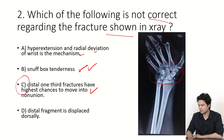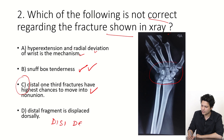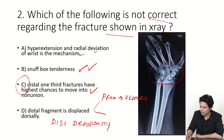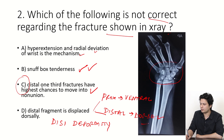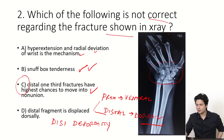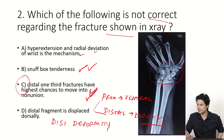The fourth option: the distal fragment is displaced dorsally — yes, this is also known as DISI deformity in scaphoid fractures. In displaced scaphoid fractures, the proximal pole goes ventral while the distal fragment moves dorsal. This is the type of deformity that occurs in all displaced scaphoid fractures.